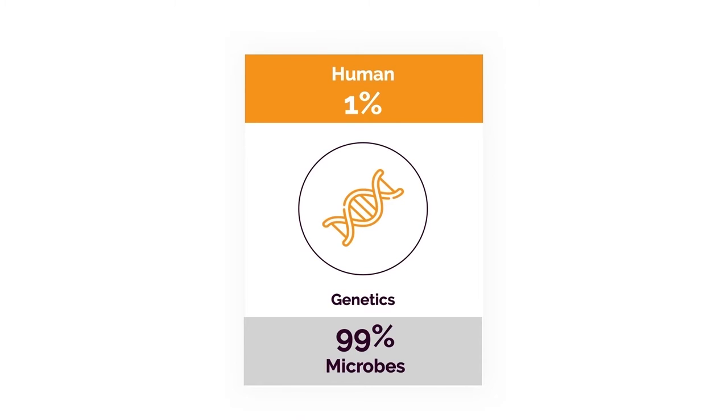Believe it or not, if we take the sum total of all the genes in our body, only 1% is actually human. The other 99% come from bacteria and other microbes, mostly living in our intestines and airways. For the people that like to blame genetics, you may not even have terrible genetics — your genetics may be just fine. You may just have a bacterial imbalance, and that's what's causing a significant problem.